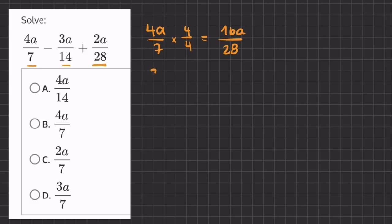And let's go on to our next one, 3a over 14. If we multiply this fraction by 2 in the numerator and denominator, we will get 6a over 28.